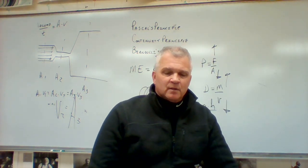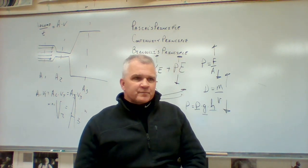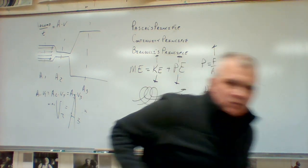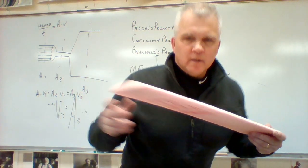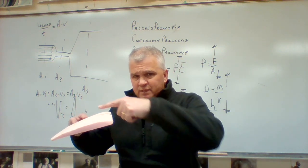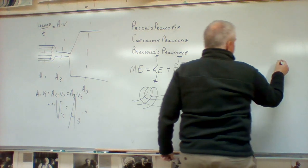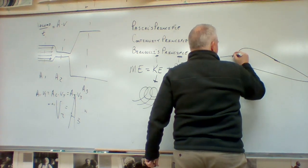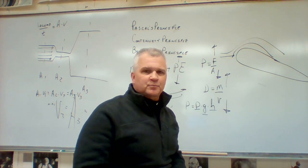According to Bernoulli's principle, as the velocity of the fluid increases, the internal pressure decreases. If we pitch an airplane wing so that air is forced to go over the top at a faster rate than the air on the bottom — if this is our airplane wing — the pressure pushing down is going to be less than the pressure pushing up.